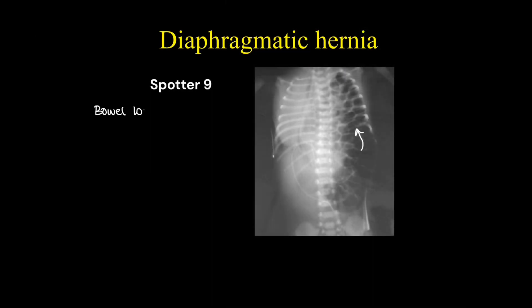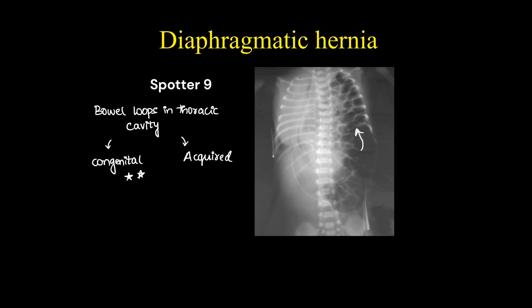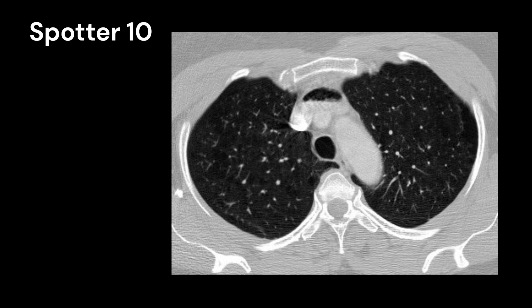This was a simple case — diaphragmatic hernia — in which bowel loops are seen in the thoracic cavity, herniated from the abdominal cavity. It can be congenital or acquired; congenital is more common in pediatric cases.